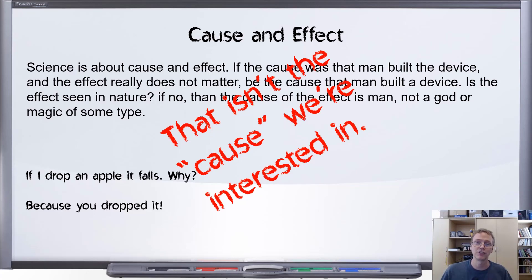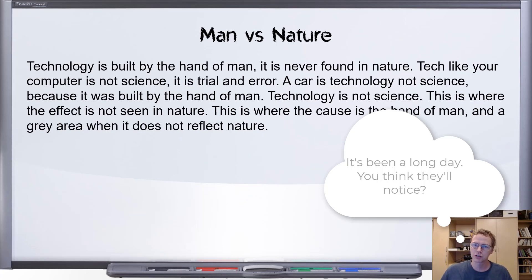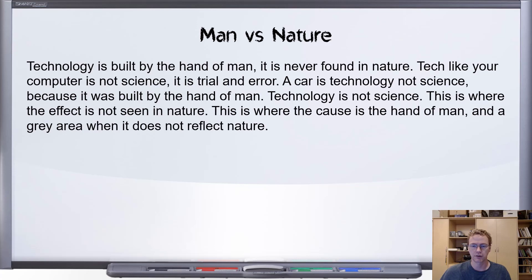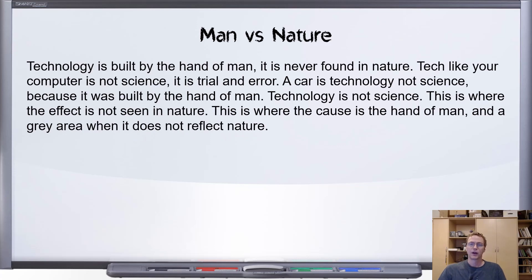So just because I built something, that does not eliminate the cause and effect we're trying to talk about. Finally, we come to the last objection to the Cavendish experiment as legitimate science — and that is the issue of science versus nature. Let's read: 'Technology is built by the hand of man, it is never found in nature. Tech like your computer is not science — it is trial and error. A car is technology, not science, because it was built by the hand of man. Technology is not science. This is where the effect is not seen in nature. This is where the cause is the hand of man.'